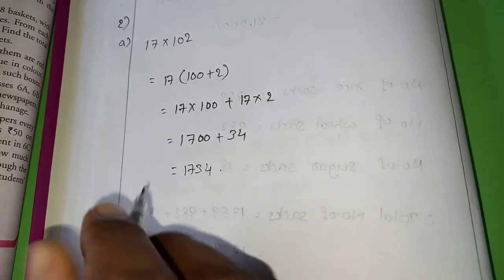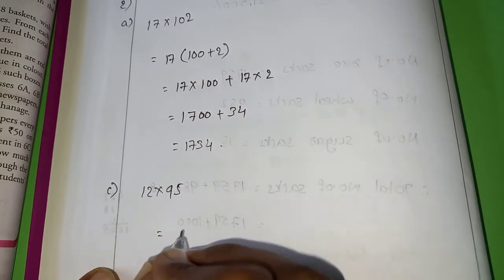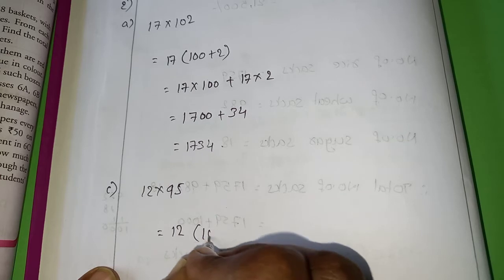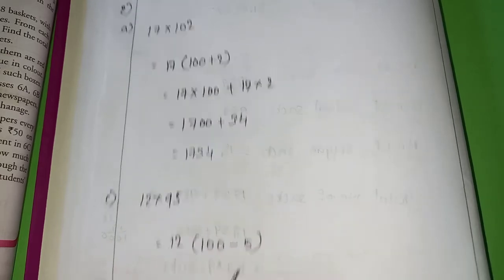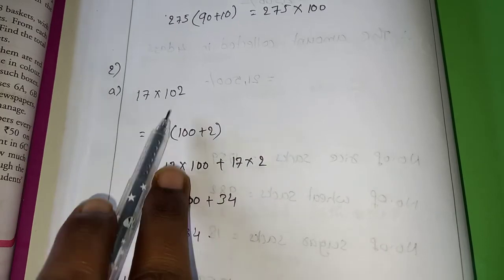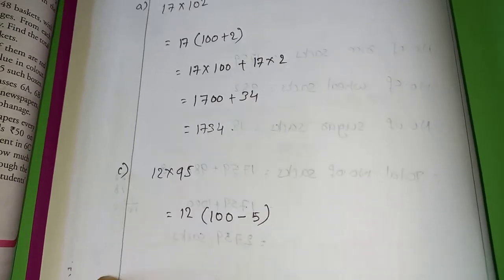In the same way, do the B also. Now, I will explain C. 12 into 95. Here, use subtraction. 100 minus 5. Here, I used addition because this is more than 100. And here, I used subtraction. This 95 is less than 100.